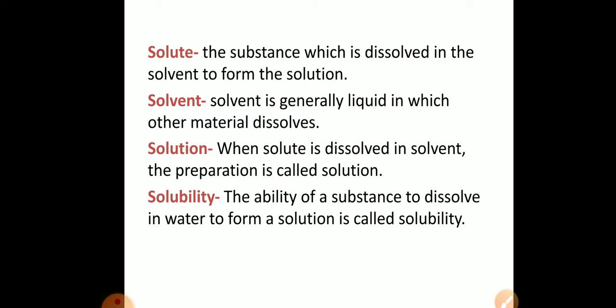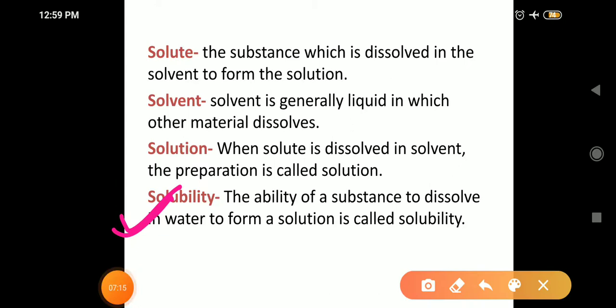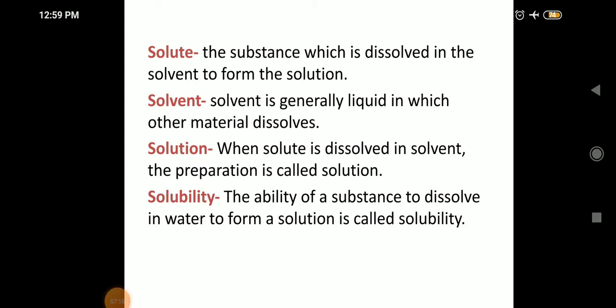To summarize: solute is the substance which is dissolved in the solvent to form a solution. Solvent is generally water in which other material is dissolved. Solution is the preparation formed due to the mixing of these two. One more term is solubility — the ability of a substance to dissolve in water to form a solution is called solubility. If a solid dissolves, we say it is soluble — for example, sugar and salt are soluble. Those which do not dissolve in water are called insoluble materials.